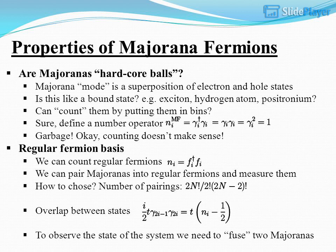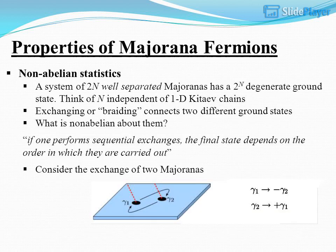In the regular fermion basis, we can count regular fermions. We can pair Majoranas into regular fermions and measure them. The number of pairings and overlap between states must be chosen carefully. To observe the state of the system, we need to fuse two Majoranas. Properties of Majorana fermions: non-Abelian statistics connects two different ground states.